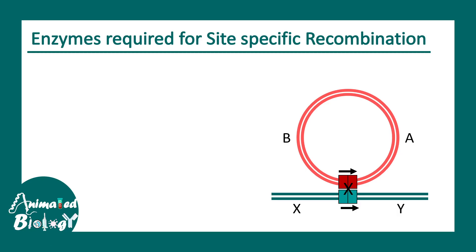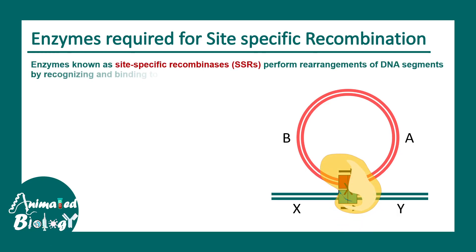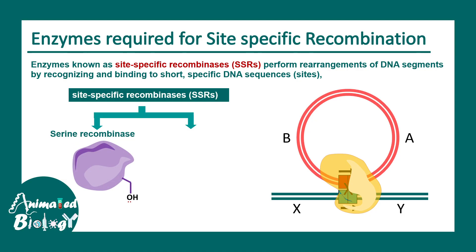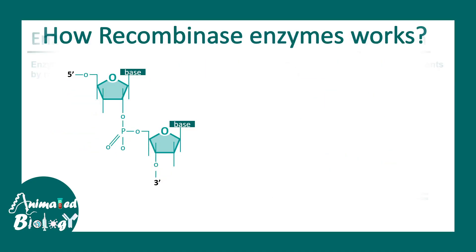Let's talk about the enzymes that lead to site-specific recombination. The key enzyme is known as the site-specific recombinase. Any recombinase enzyme has some kind of nucleophilic center — in most cases it is either serine or tyrosine. So there are two types: serine recombinases, which have serine in their active site, and tyrosine recombinases, which have tyrosine in their active site.